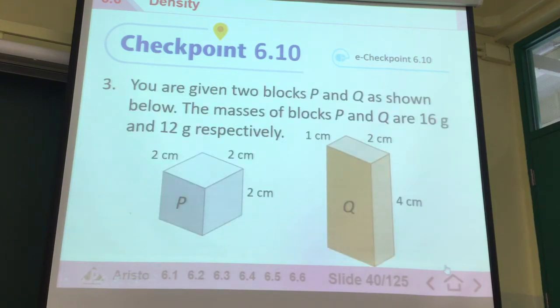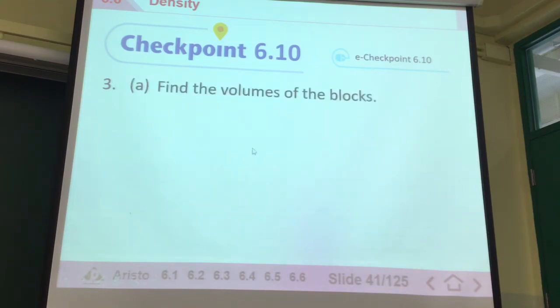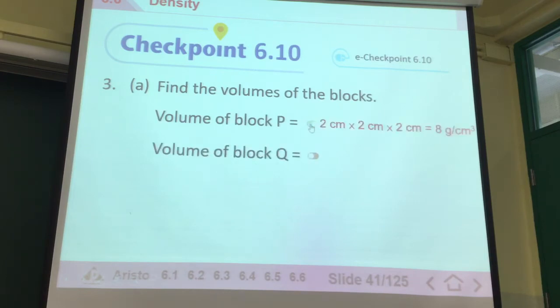In question 3, you have two different blocks, P and Q. First, determine the volume of P. The volume is length times width times height. The volume of P is 2 times 2 times 2, which equals 8 cm³. The volume of block Q is 1 cm times 2 cm times 4 cm, which gives you 8 cm³, which is exactly the same.